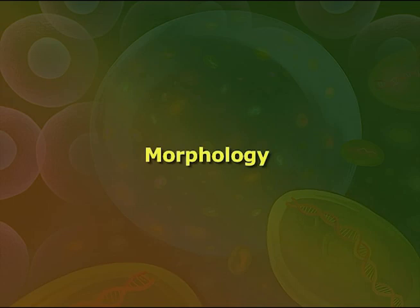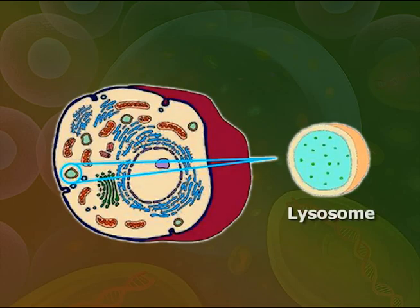Morphology, shape and size. The lysosomes are generally spherical in shape, but certain meristematic cells of plant roots contain irregular shaped lysosomes.